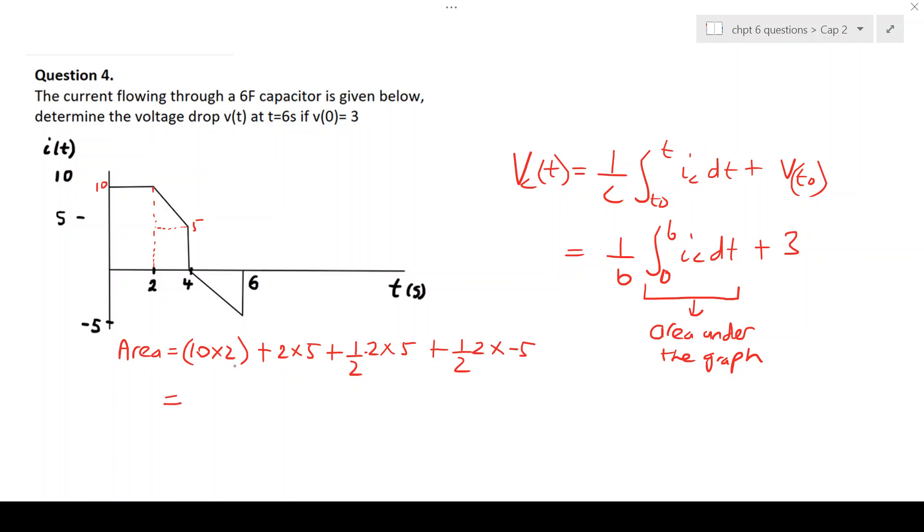So that gives you 20 plus 10 plus 5, plus a negative 5. And that gives you a value of 30.